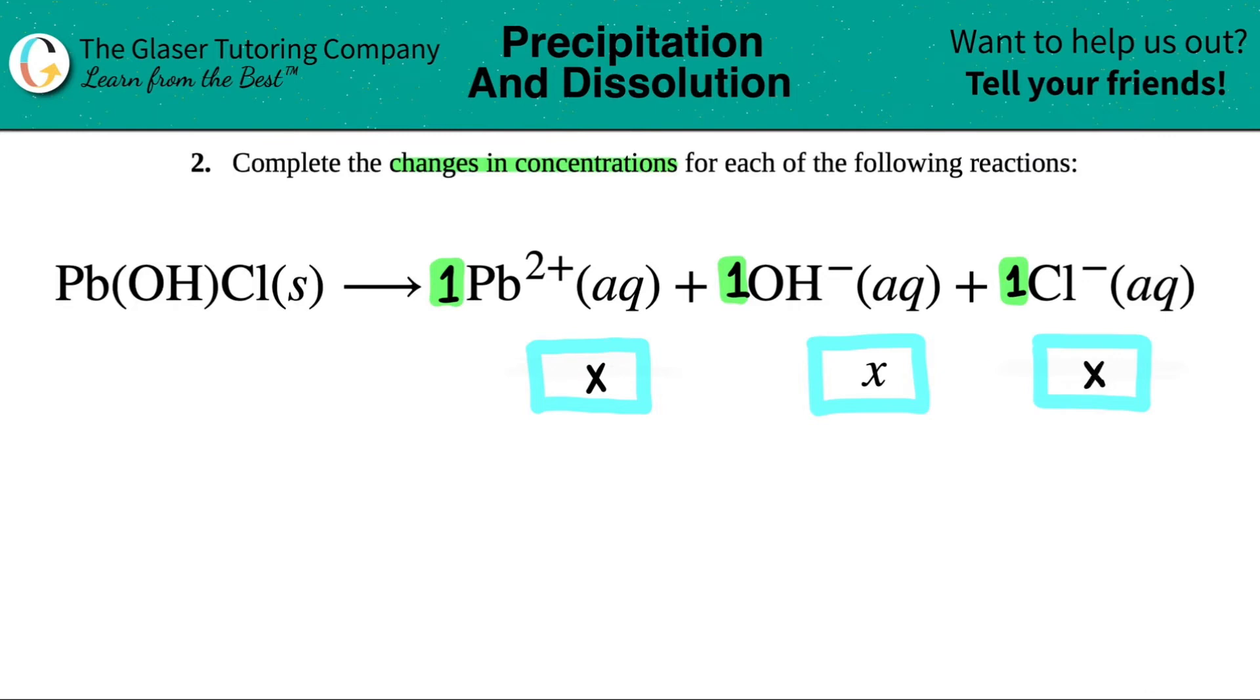Another way to look at it is your change in concentration is always going to be your coefficient in front of the variable. In this case, they labeled it as X. But just know that if we stuck a 1 in front of all of these, 1X, 1X, and 1X, one times anything is itself. That's why we don't usually see a variable in front of just an X if there's only one of them. So X and 1X are completely the same.